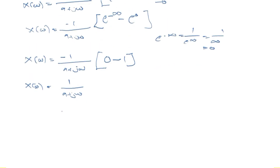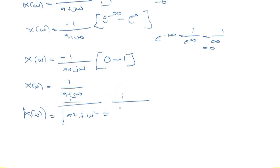In order to get rid of the imaginary j, we don't want our expression to be complex, so we are going to take the magnitude — the absolute value. Taking the absolute value of one over a plus j omega, we get one over the square root of a squared plus omega squared. So this is our expression for X of omega, and we can now draw the spectrum with this expression.